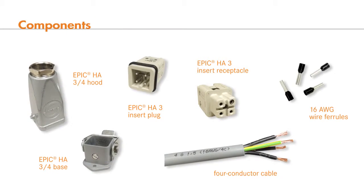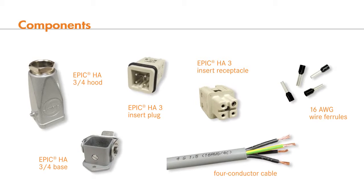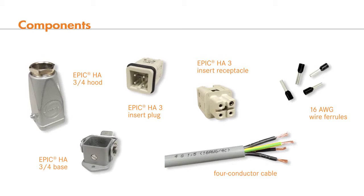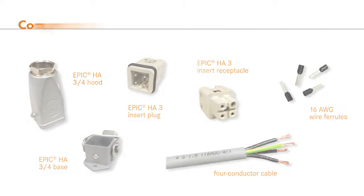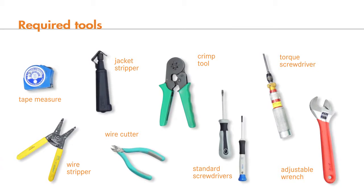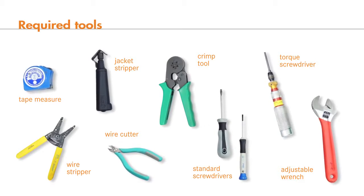In order to wire your EPIC HA3 connector, you will need the following components and tools. In this example, we will be using a 16-gauge 3-conductor cable with ground. You will also need wire and jacket stripping tools, a contact crimp tool, both standard and torque screwdrivers, and an adjustable wrench.